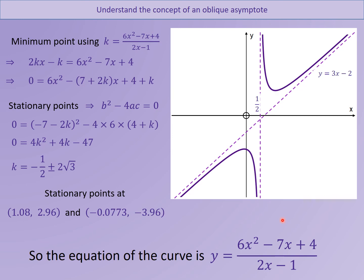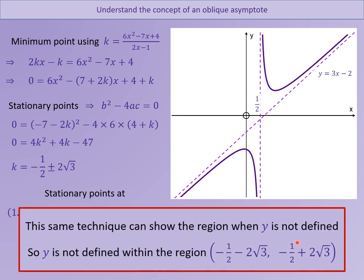One thing worth noting: the examiner could ask this in a slightly different way. They could ask when is this graph undefined. What they mean by undefined is when you've got a y value that it can't equal — in other words, it's asking for the range. The graph is undefined between those two K values. So the same technique shows us that y is not defined between those two values.